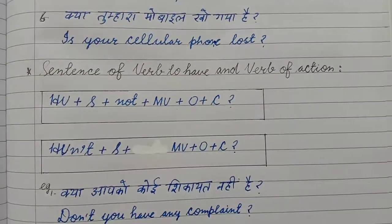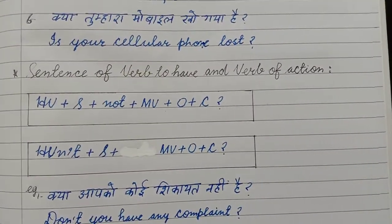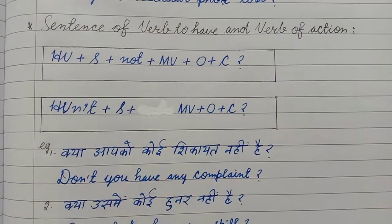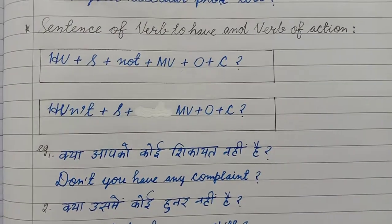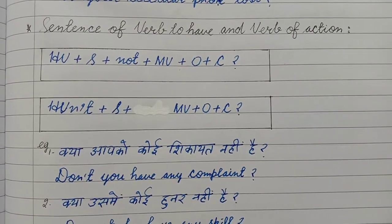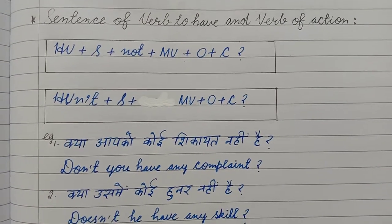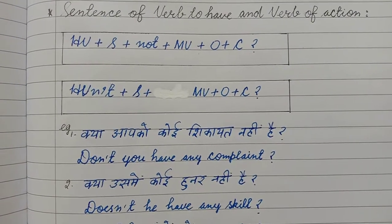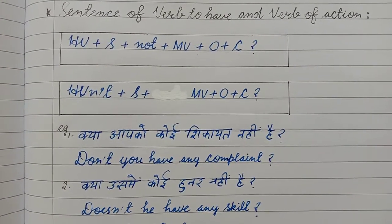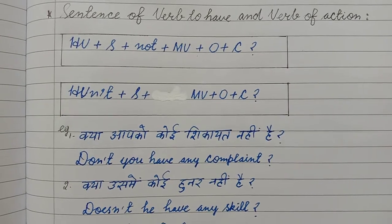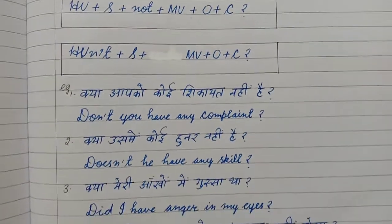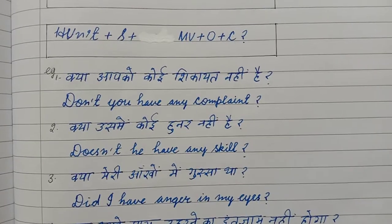Now, construction of sentence for verb to have and verb of action: these always start with the helping verb, then subject, then not, then main verb, then object, then complement, then question mark. If you want to bring 'not' before the subject in short form: helping verb + n't, then subject, then main verb, object, complement.